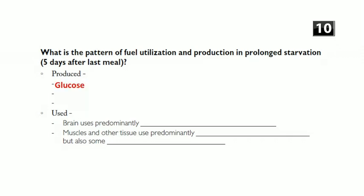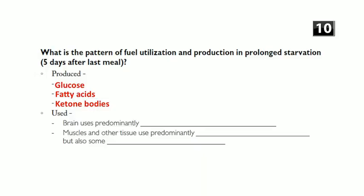Question ten: what's the pattern of fuel production and utilization in prolonged starvation — five days after the last meal? For fuel production, you're still making glucose from hepatic gluconeogenesis, fatty acids from adipose tissue, and ketone bodies. What's different is the fuel use: at five days the brain is predominantly using ketone bodies — it's finally given in and is no longer primarily using glucose. Muscles and other tissues are predominantly using fatty acids, but also some ketone bodies.